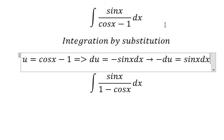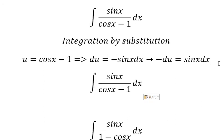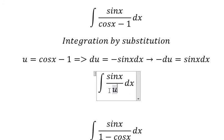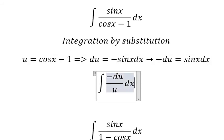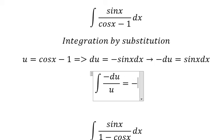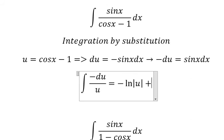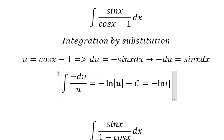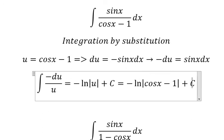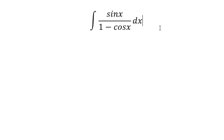So this part we change to u, and sin x dx we change to negative du. The integral of du over u gives ln of the absolute value of u, and we add the constant C. Here u is cos x minus one, so that is the answer to question number one.